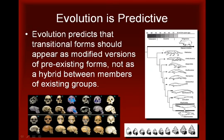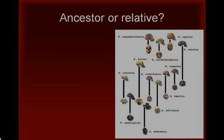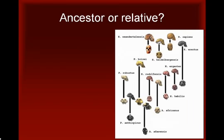Before we look at some examples of actual intermediate forms, it is important to clear up one other misconception. It is sometimes argued that a fossil specimen cannot be considered an intermediate form unless it has been shown to be the direct ancestor of an existing species or group of species.